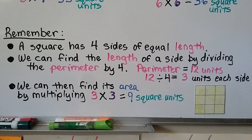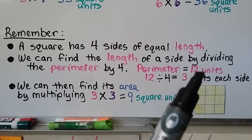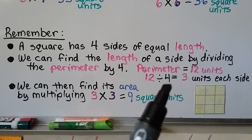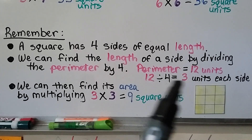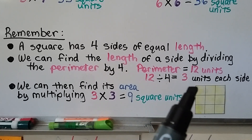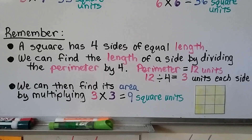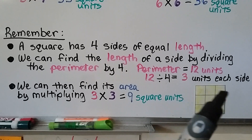Remember, a square has 4 sides of equal length, and we can find the length of a side by dividing the perimeter by 4. If the perimeter is 12 units, we do 12 divided by 4, which equals 3 — so it has 3 units on each side. We can then find its area by multiplying 3 times 3, which is 9 square units.